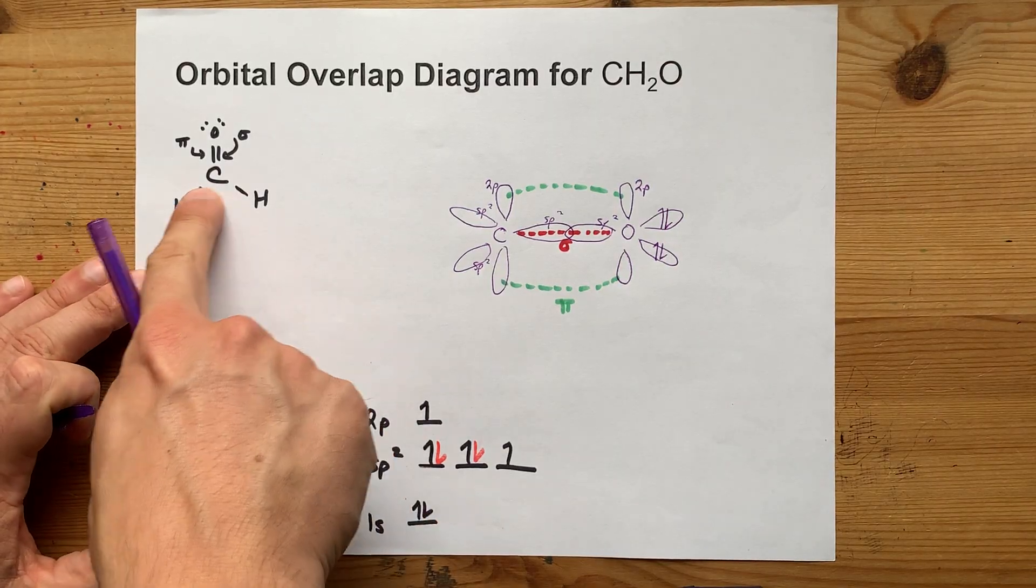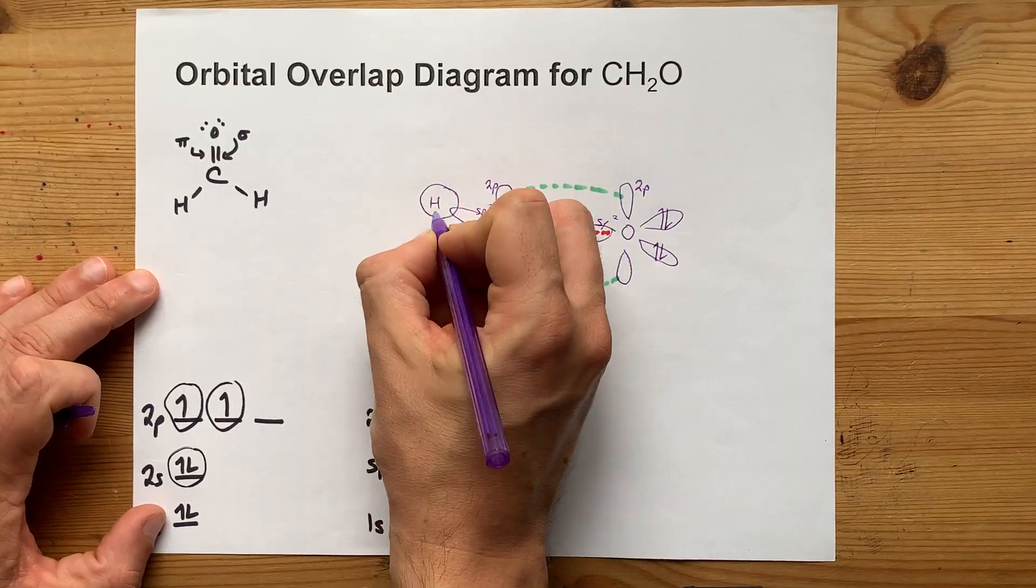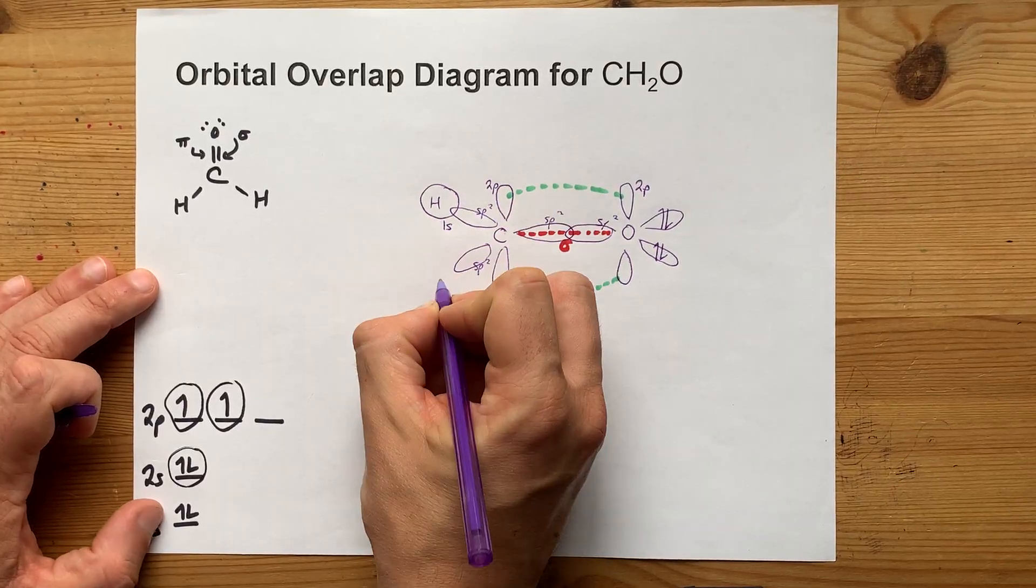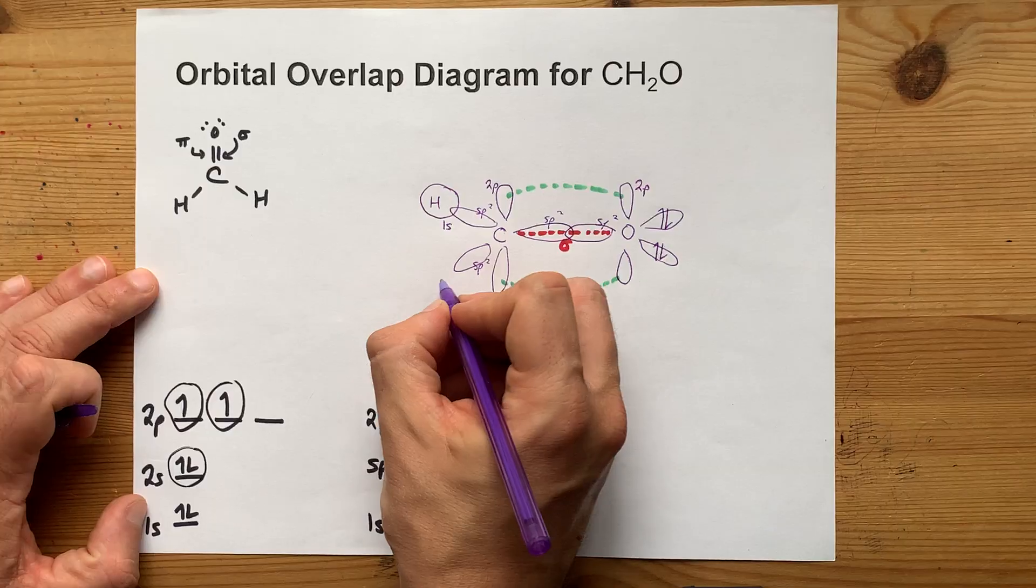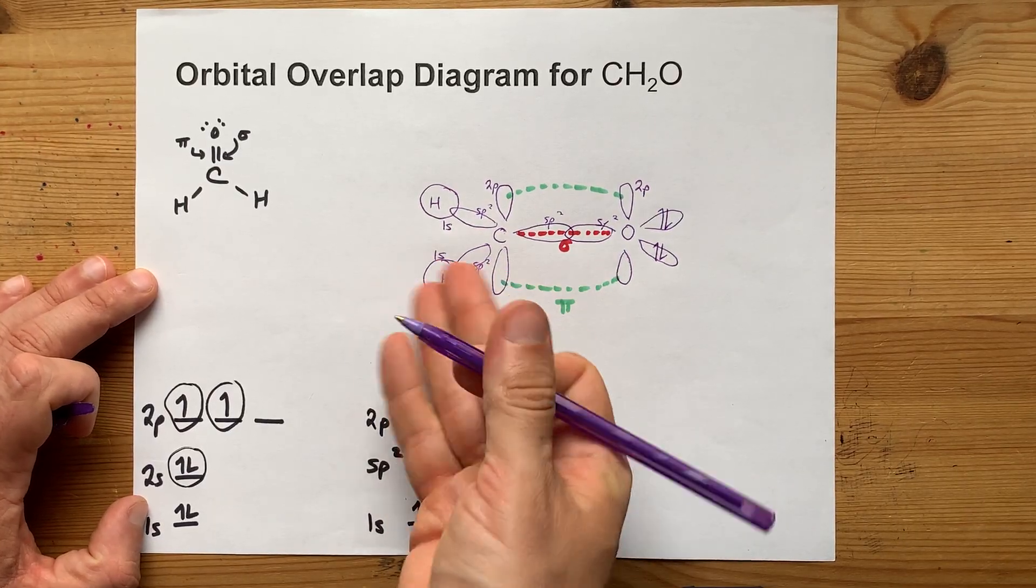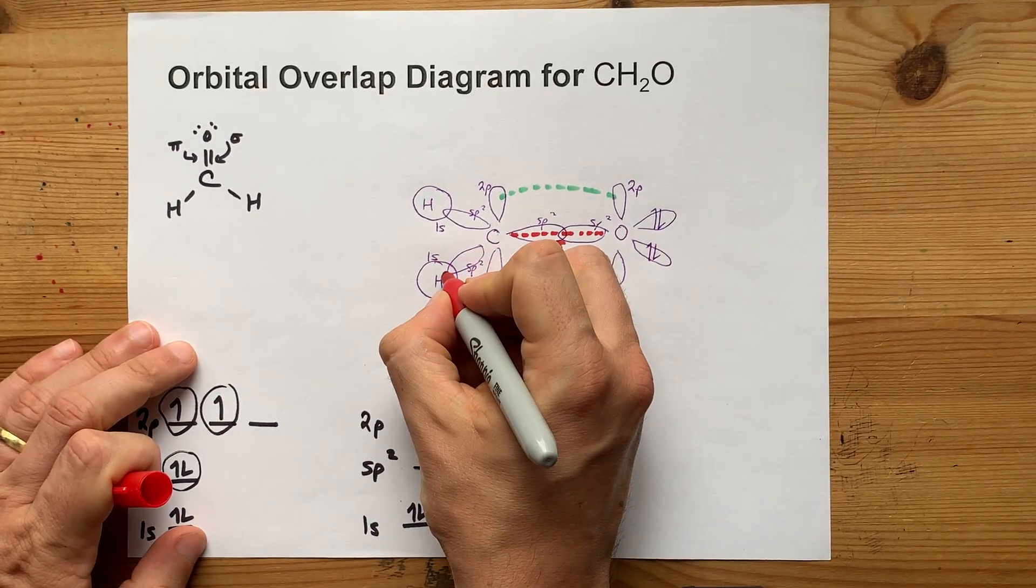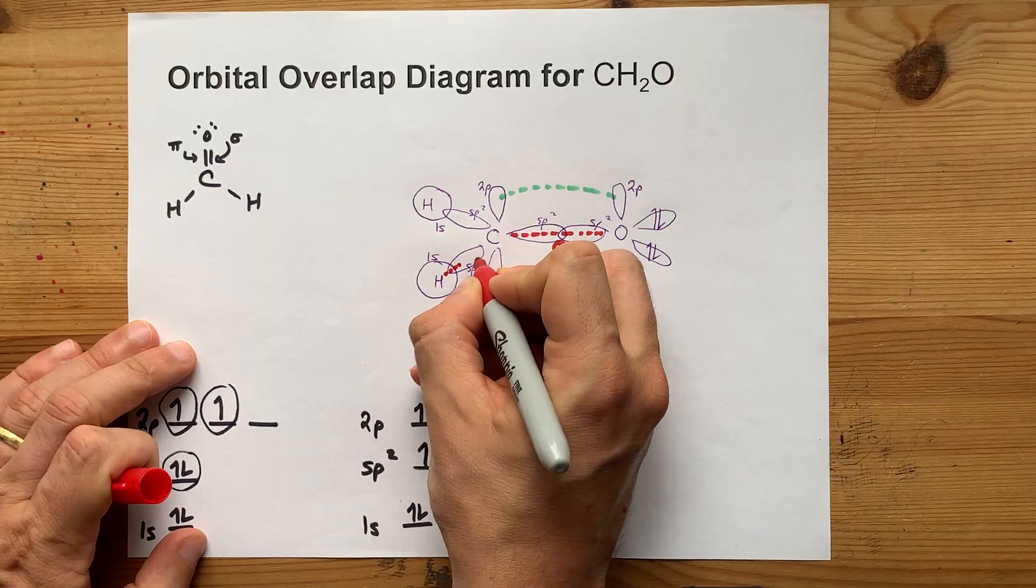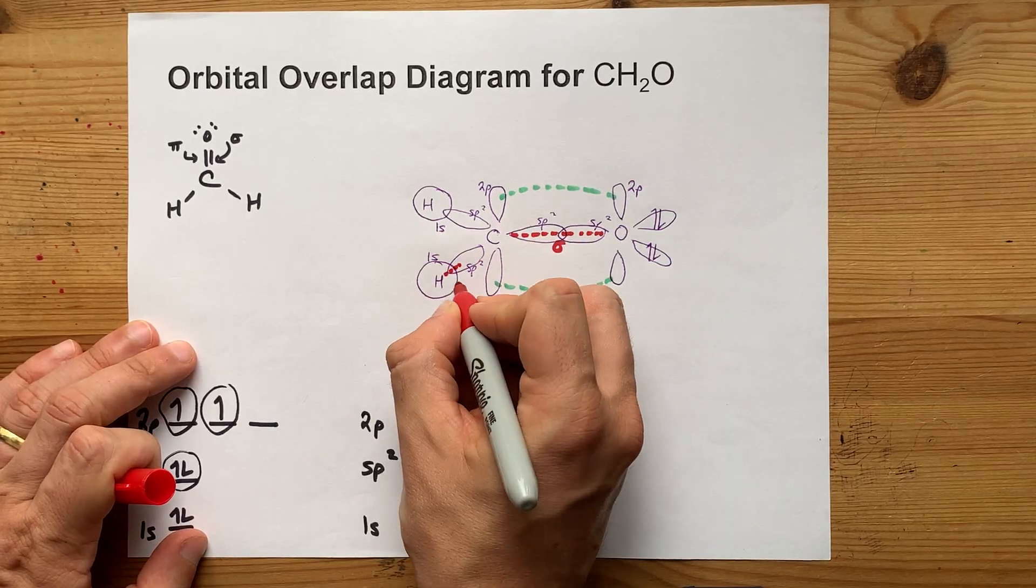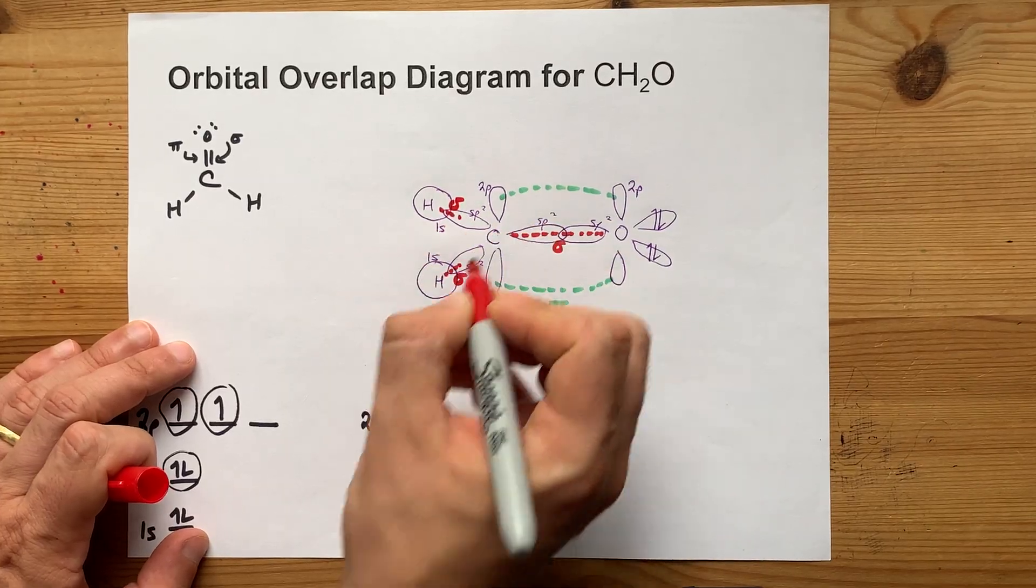And lastly, that carbon is, of course, attached to two hydrogens. I just draw those as H's with circles around them. That circle is the 1s orbital. Hydrogen does not hybridize, and you're done. Now, officially, the overlap between the sp² of carbon and the 1s from hydrogen also makes a sigma bond, and this is also a sigma bond as well.